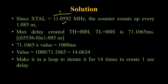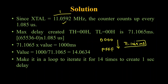it counts from 0x0000 up to 0xFFFF. For a full count from minimum to maximum, the time taken works out to approximately 71.1065 milliseconds. Since we know that is about 71 milliseconds, if we multiply by 14 we can create a 1-second delay. So the loop must iterate 14 times to achieve 1 second, and the TH0 and TL0 values should be 0x00 for this.